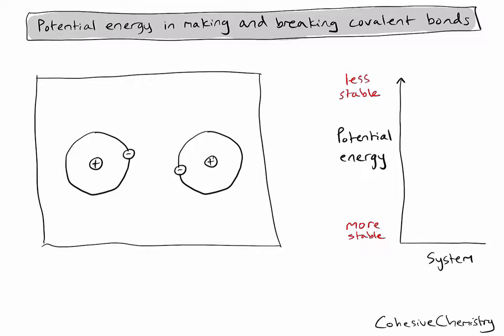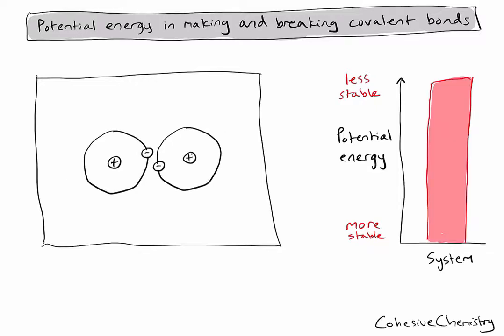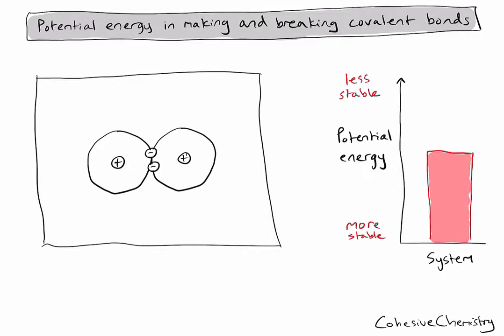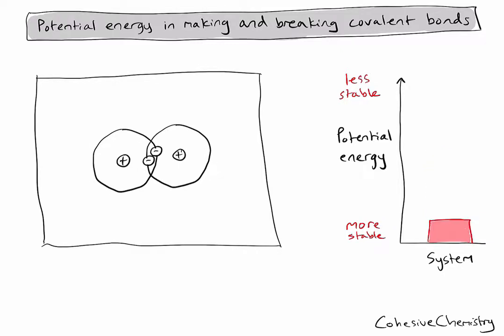So if I consider the reverse process — making a covalent bond — let's see what happens. We're seeing the reverse process, and as they move closer and closer, the potential energy drops lower and lower as my system becomes more stable again.